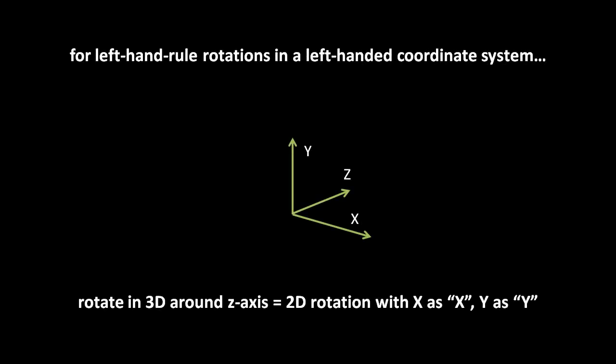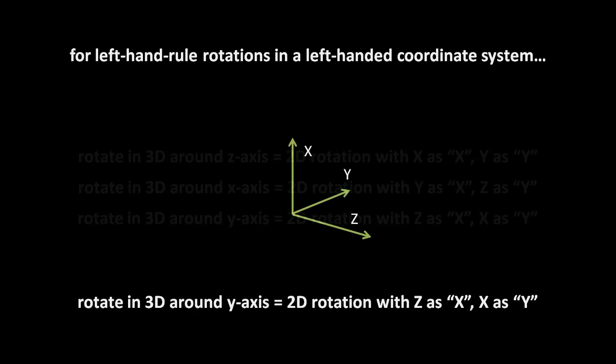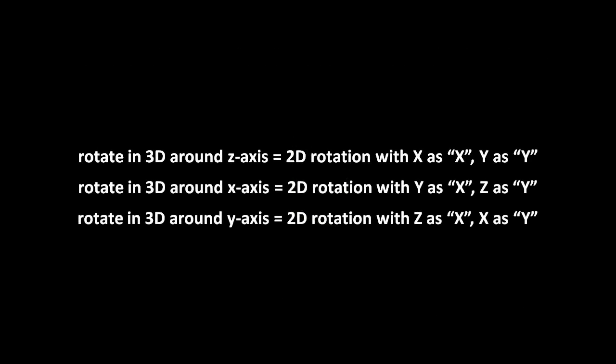Now, for a left-handed system with left-hand rule rotations, the rotations around the axes actually work out the same. Rotations around the z-axis use x for x and y for y, rotations around the x-axis use y for x and z for y, and rotations around the y-axis use z for x and x for y. But what if we mix the left-hand rule conventions with a right-hand system, or mix the right-hand rule convention with a left-hand system? Well, we could either swap the two coordinate values we plug into our formula, e.g. x becomes y and y becomes x, or we could simply negate the angle of rotation. Again though, we'll stick to the dominant convention of right-hand rule rotations in our right-hand coordinate system. So to be clear, for us: rotations around the z-axis will use x for x and y for y, rotations around the x-axis will use y for x and z for y, and rotations around the y-axis will use z for x and x for y.